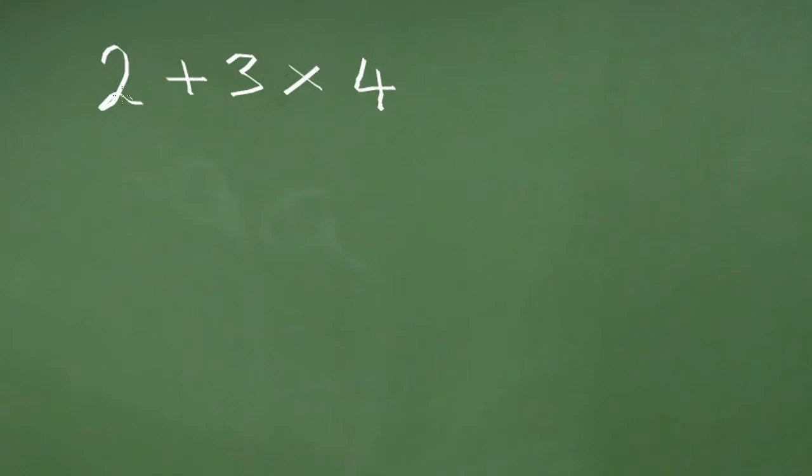So there are two ways we could do this. We could either start from left to right doing the 2 plus 3 first, or we could go from right to left working with 4 times 3 then adding the 2.